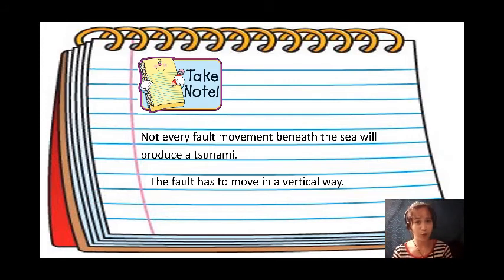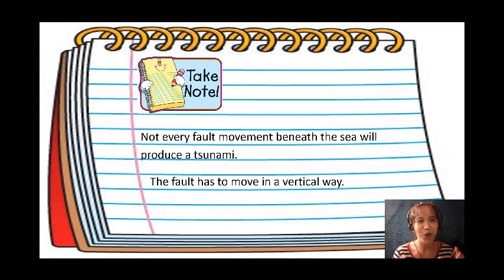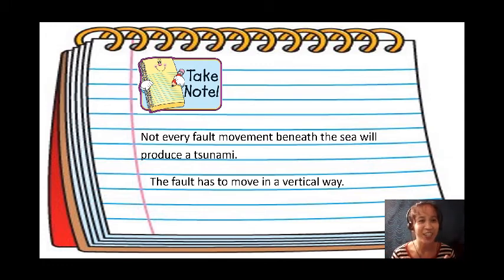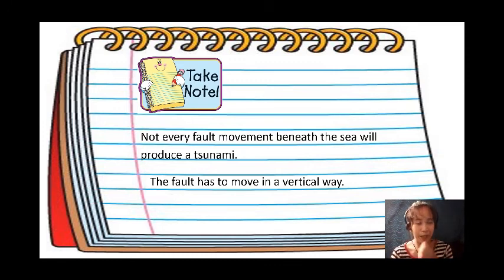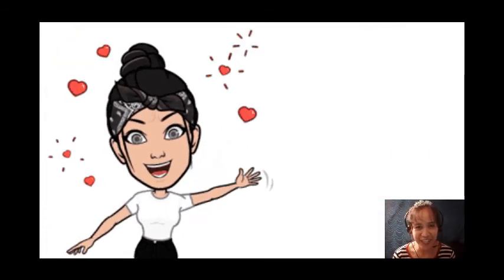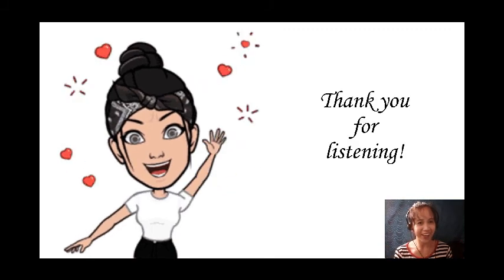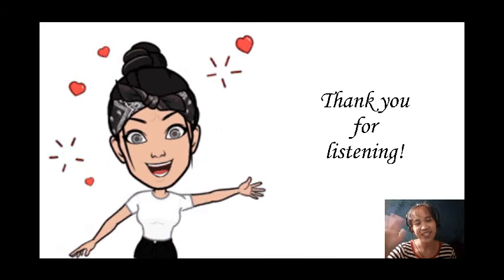So now you know the relationship between earthquakes and tsunamis. A tsunami occurs when a fault moves vertically in or near a body of water. That's all for today's discussion. If you have any clarifications or questions, don't forget to write them in the comment box. Thank you, and I hope you learned something in this video. See you next time, kids — bye!